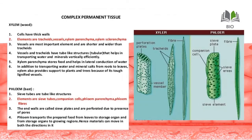Xylem has thick-walled elements. Vessels are the most important elements — they are shorter and wider than tracheids. Vessels and tracheids have a tube-like structure that helps in transporting water. Xylem parenchyma stores food. In addition to transporting water and mineral salts from roots to leaves, xylem also provides support to plants and trees because of its lignified vessels.